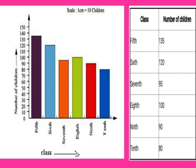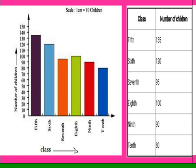In the bar graph, the x-axis shows different classes: 5th, 6th, 7th, 8th, 9th, and 10th. The y-axis uses a scale of 1 cm = 10 children. From the table: 5th standard has 135 children, 6th has 120, 7th has 95, 8th has 100, 9th has 90, and 10th has 80. With these values we have drawn the bar graph.